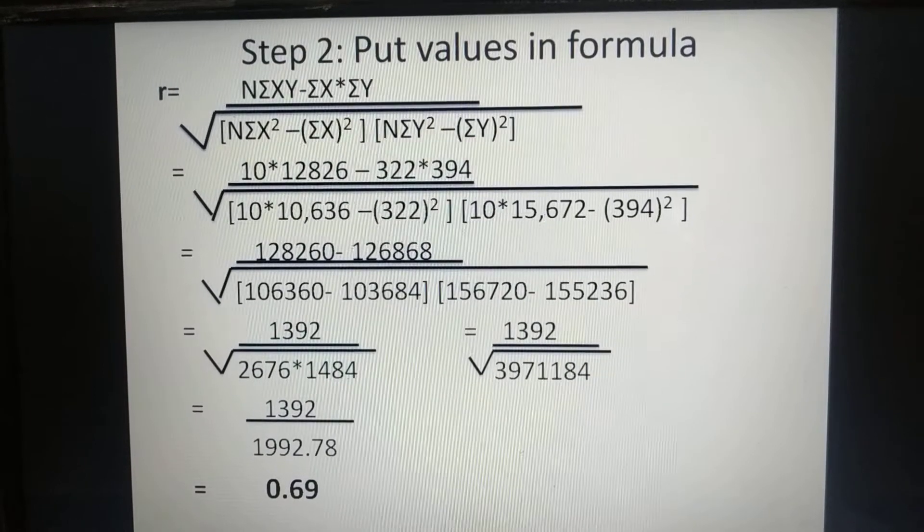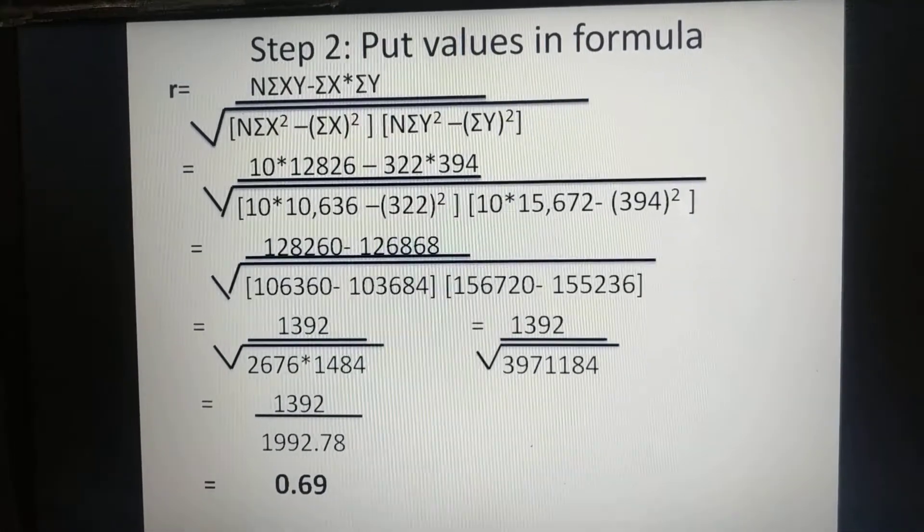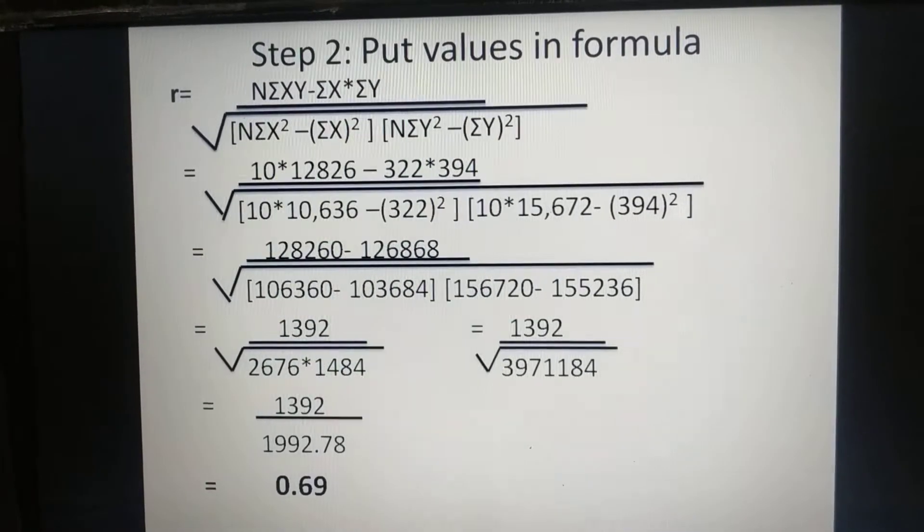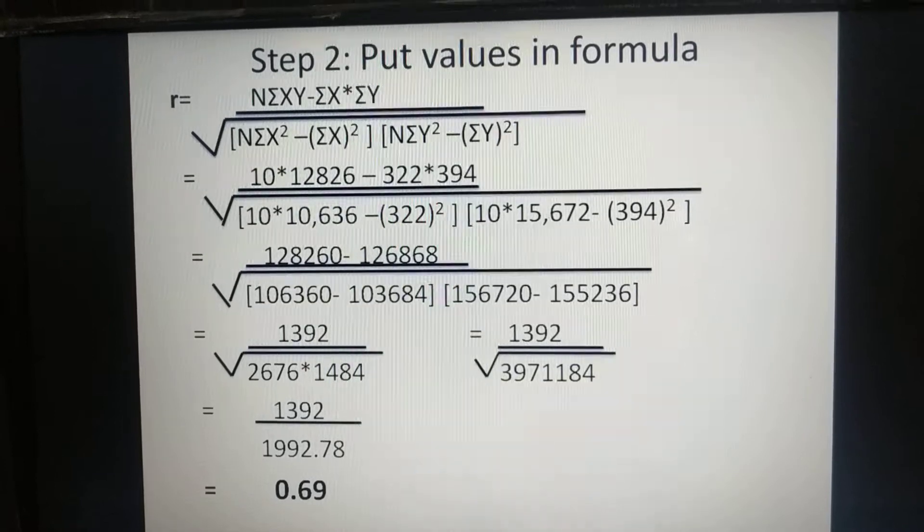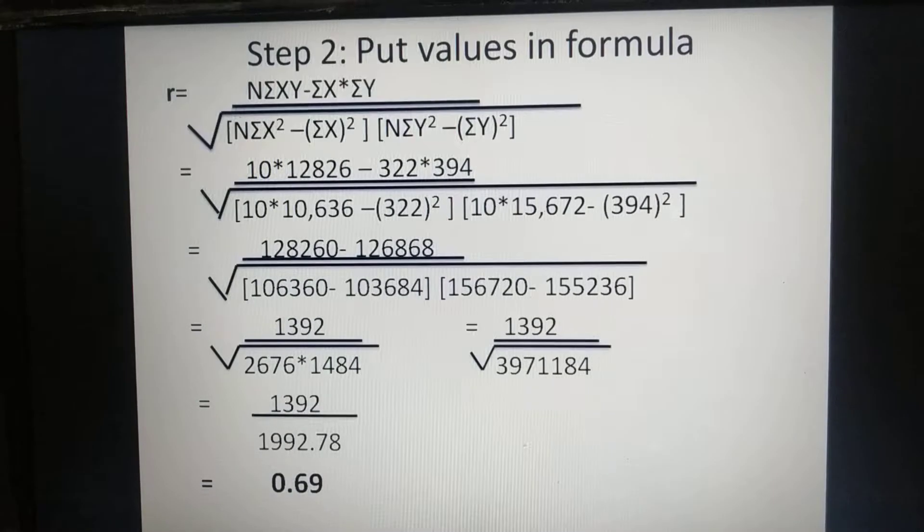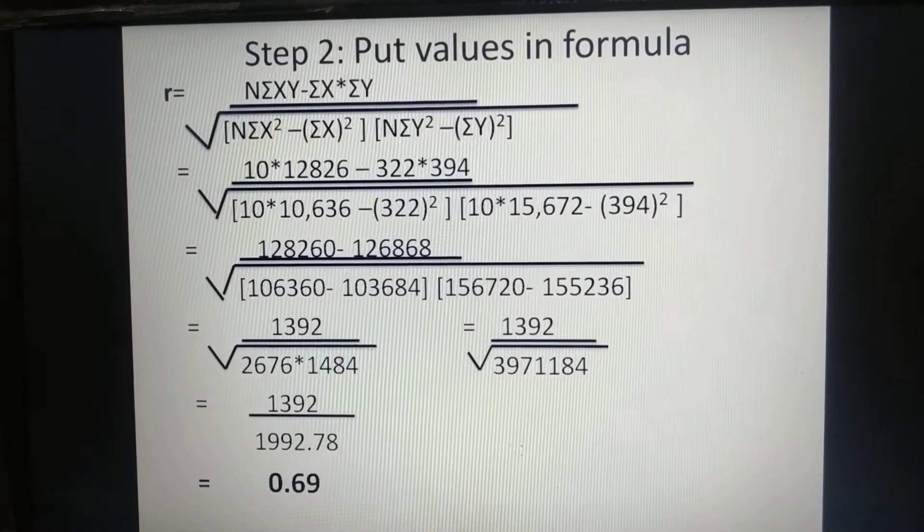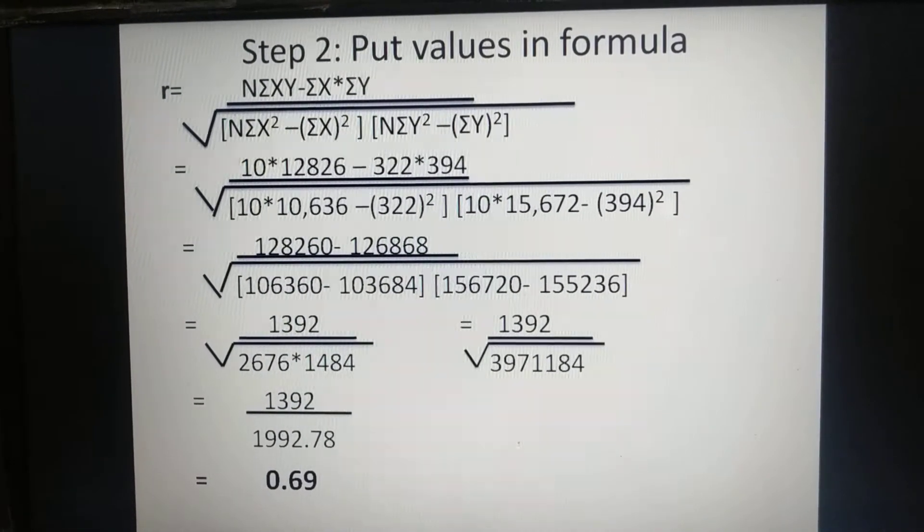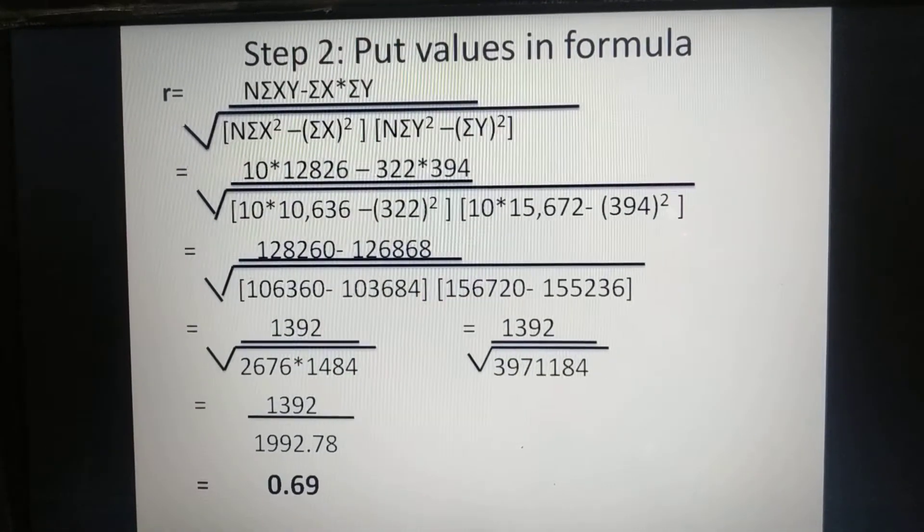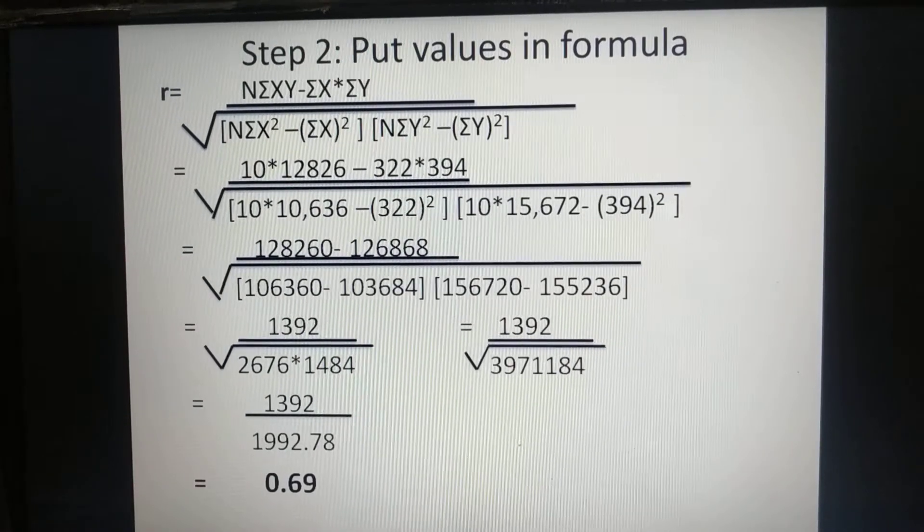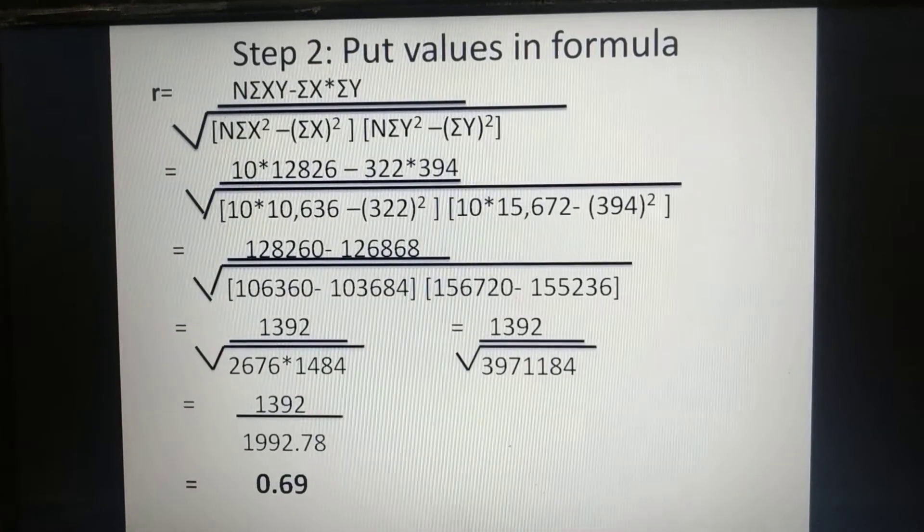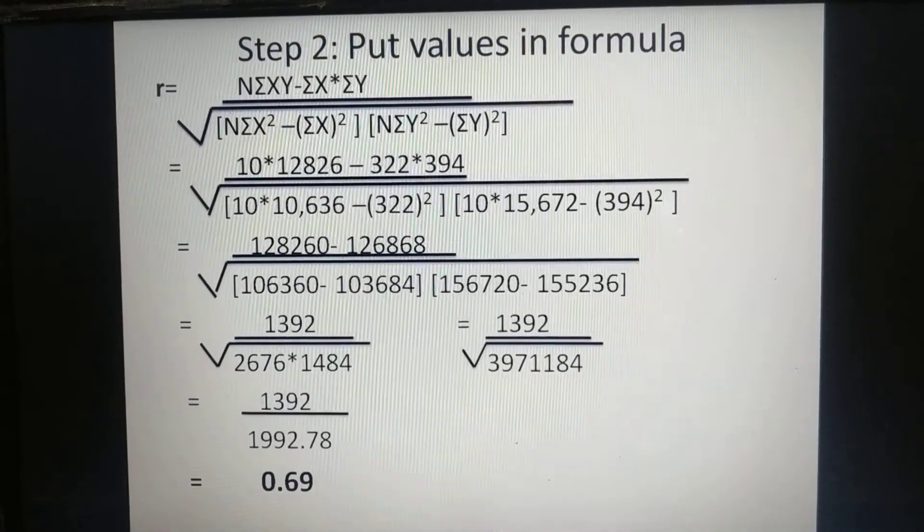Put all values to their respective place. Next subtract 12826 with 126868. The value will come 1392. Below subtract respective values of first bracket. Value comes 2676. Then subtract values of second bracket. Value comes 1484.